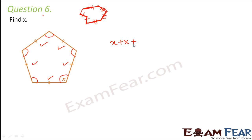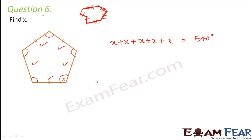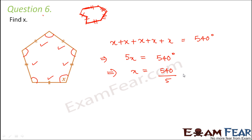So basically here the sum of the interior angles would be x plus x plus x plus x plus x, which equals 540 degrees — using the formula (n − 2) × 180 degrees where n equals 5. So from here you get 5x equals 540 degrees, or x equals 540 divided by 5, which is 108 degrees. So that's the value of x.